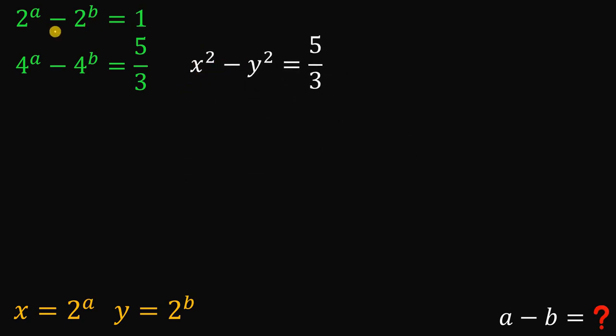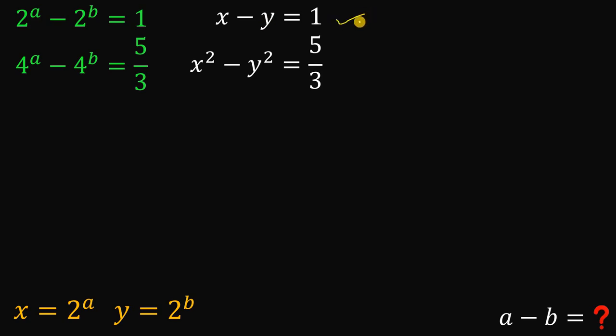Now, how about the first equation? If we have 2 raised to the power of a minus 2 raised to the power of b equals 1, this becomes x minus y equals 1.